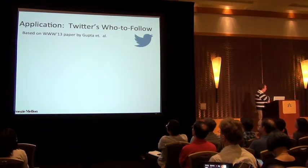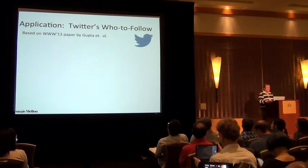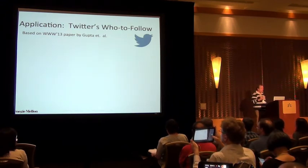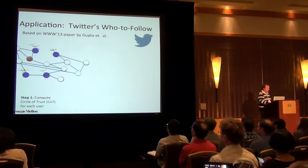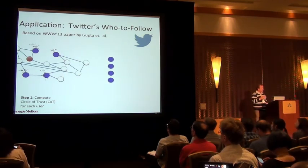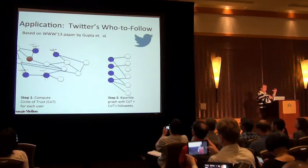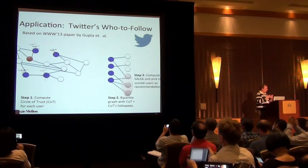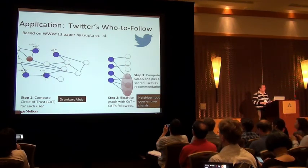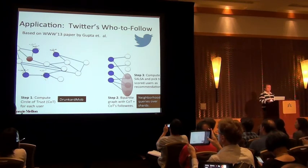So, simple application... Not simple, but application I implemented of this was actually what Pankaj just explained. And so, I replicated their WTF algorithm based on the paper. So, using this Drunkard Mob, I compute a circle of trust, and then using this graph query system I have now, I create this bipartite graph which has, on the left side, the circle of trust, and on the right side, the followers of the circle of trust. And then I run salsa on just a simple algorithm. So, the step one, completed the circle of trust, I use Drunkard Mob, and for step two, we use the neighborhood queries of a shard.